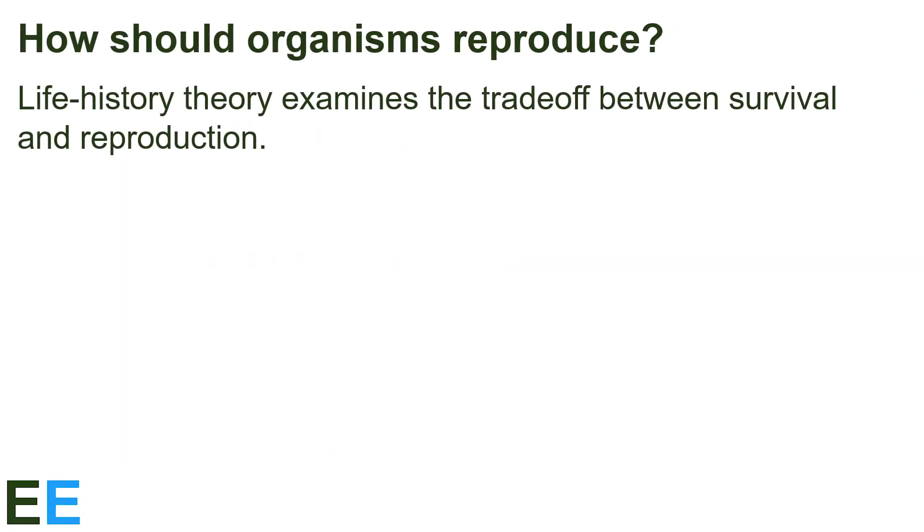How should organisms reproduce anyway? Life history theory, a subfield within evolution and ecology, can provide some insight. Life history theory examines the trade-offs between survival and reproduction, and one aspect of this is semelparity vs. iteroparity, how often to reproduce.